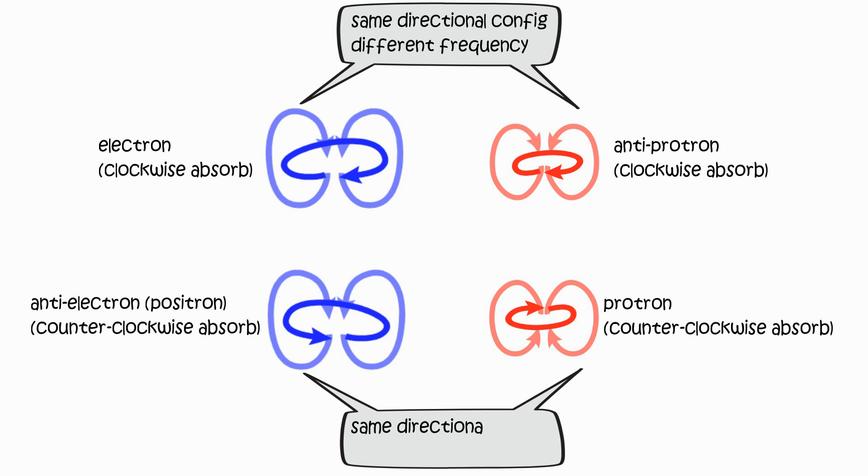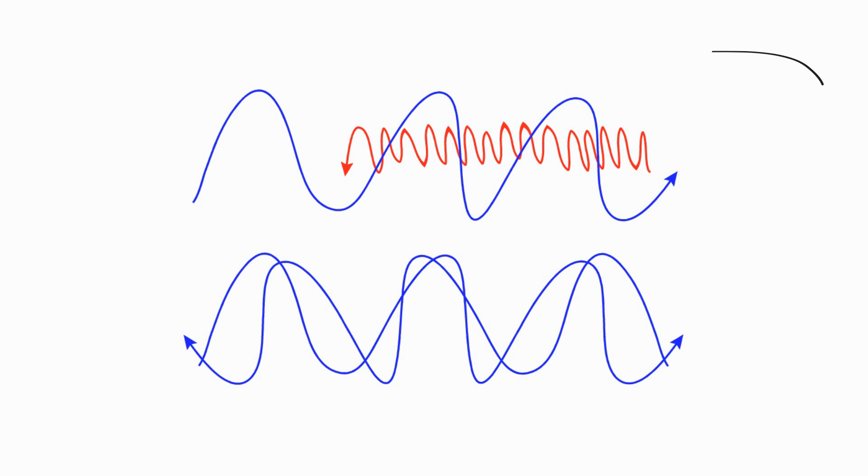Electron and positron has same low frequency. Proton and antiproton has same high frequency. Highly different frequencies has little interference. Similar frequencies has high interference.